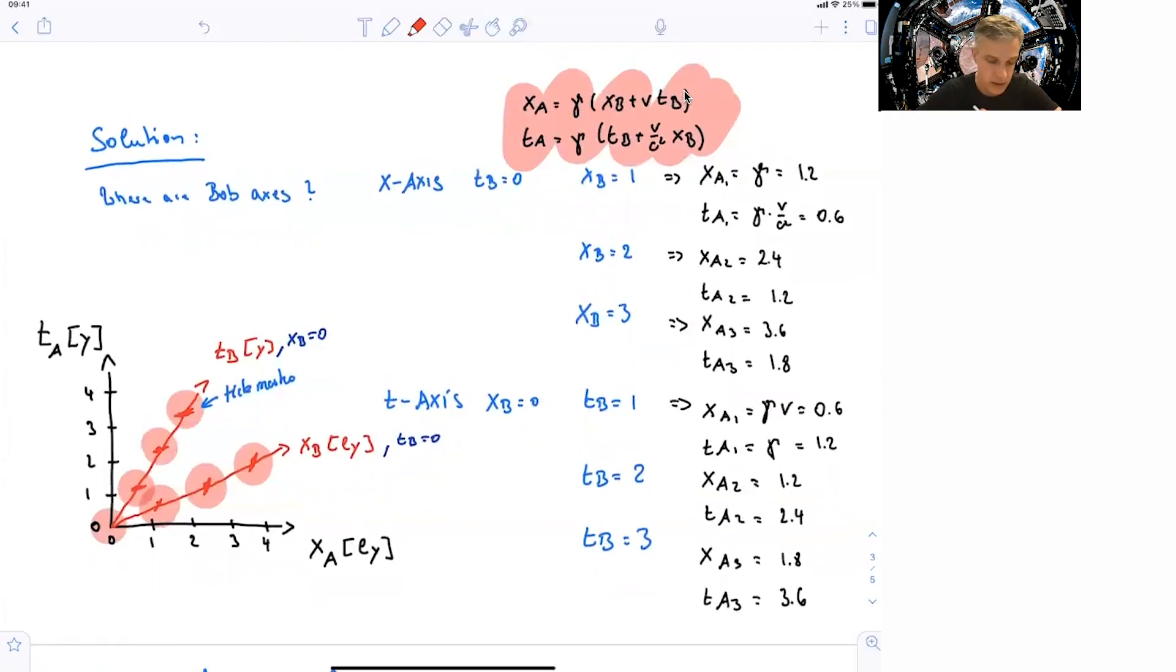OK, so this is already it. So we found Bob's time axis, where xb is equal 0, and Bob's x-axis, where tb is equal 0. And I did draw those tick marks parallel to the second axis. So if I want to now find out the time axis for xb equal 1, I just have to follow along and draw a parallel in the picture here.